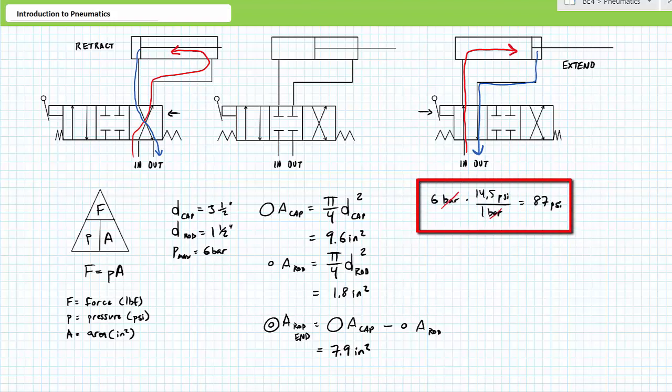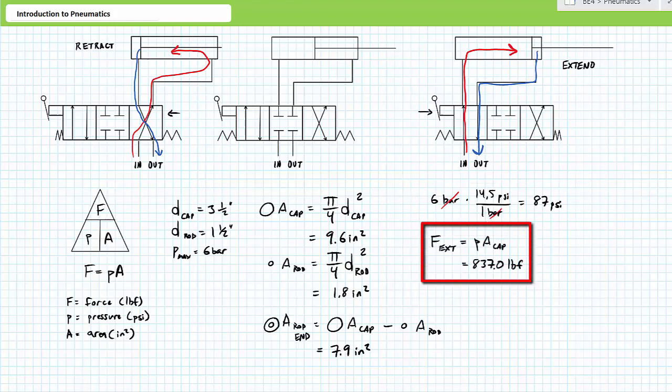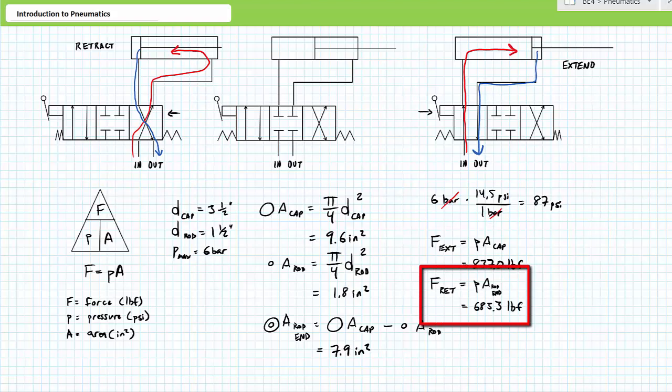One bar is equal to roughly 14.5 psi. A unit conversion demonstrates our maximum pressure of 6 bar is equal to roughly 87 psi. Extension uses the full circular cap end area. An application of Pascal's law demonstrates that 87 psi acting on the surface area of 9.6 square inches results in a maximum extension force of roughly 837 pounds. Retraction uses the smaller ring-like rod end area. An application of Pascal's law demonstrates 87 psi acting on a surface area of 7.9 square inches results in a maximum retraction force of roughly 683.3 pounds force. You will note that given the same pressure, extension force is greater than retraction.